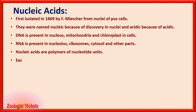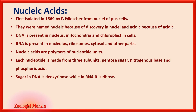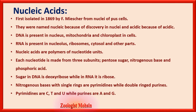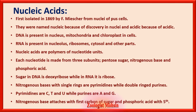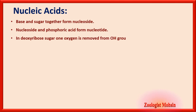Nucleic acids are polymers of nucleotide units. Each nucleotide is made from three subunits: a pentose sugar, a nitrogenous base, and phosphoric acid. The sugar in DNA is deoxyribose while in RNA it is ribose. Nitrogenous bases with single rings are pyrimidines (cytosine, thymine, and uracil), while those with double rings are purines (adenine and guanine). The nitrogenous base attaches to the first carbon of the sugar, and phosphoric acid attaches to the fifth carbon.